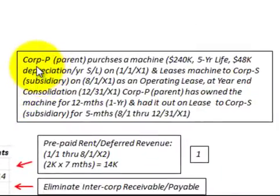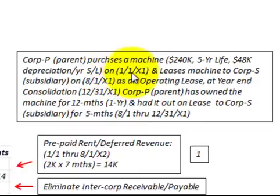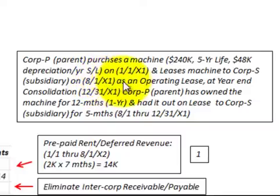For this example, we're looking at Corporation P, the parent, who purchases a machine for $240,000 that has a five-year life. Depreciating it straight line, we get $48,000 depreciation per year. They make this purchase on 1-1-X-1, then lease the machine to Corporation S, the subsidiary, on 8-1-X-1 (August 1st of year one) as an operating lease. The consolidation at year end will be on 12-31-X-1.